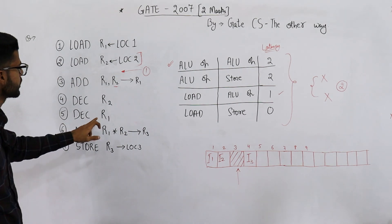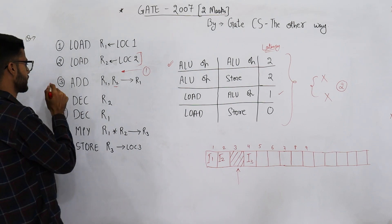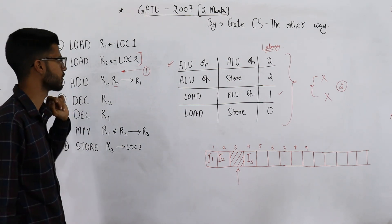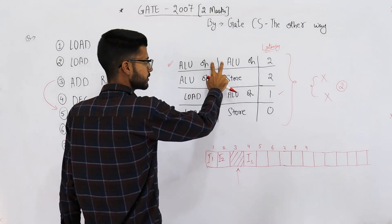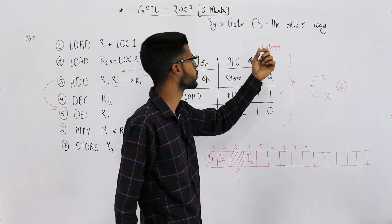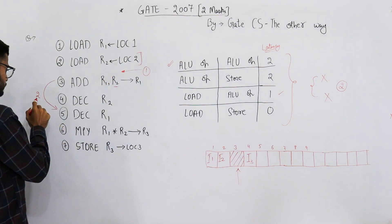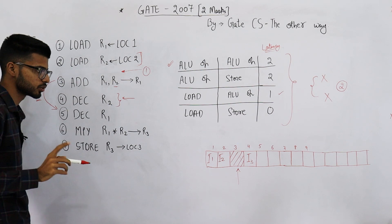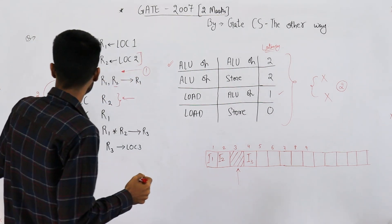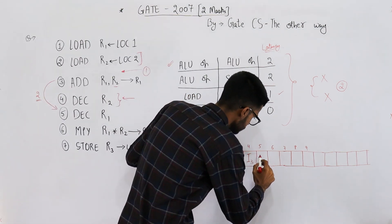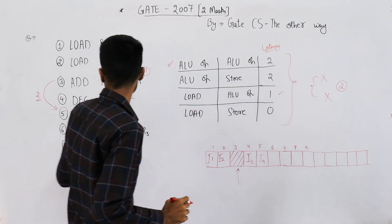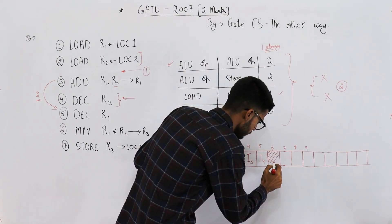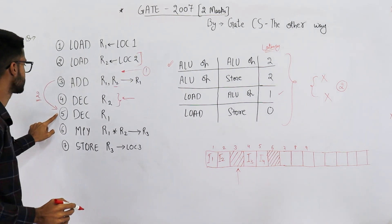The fifth instruction says decrement R1. R1 is produced by instruction three and used by instruction five, so there has to be a latency between these two. Both are ALU operations, so we need a latency of two clock cycles. One clock cycle is used in executing instruction four, so we only need to add a latency of one. After instruction three, execute four, then stall one cycle, then execute instruction five.